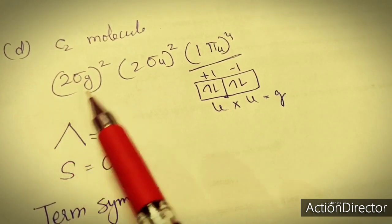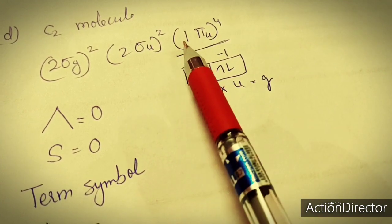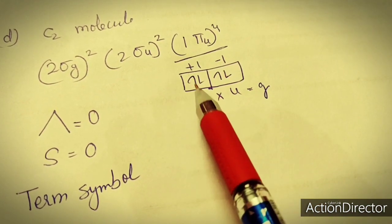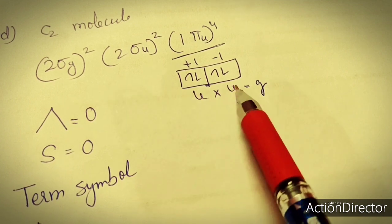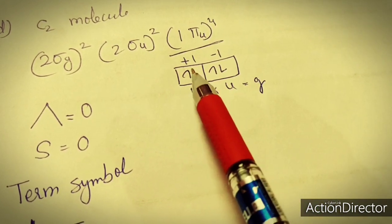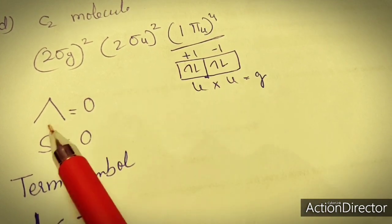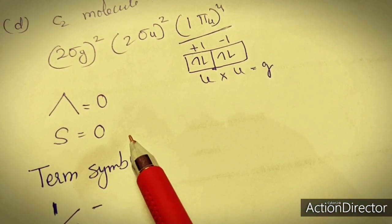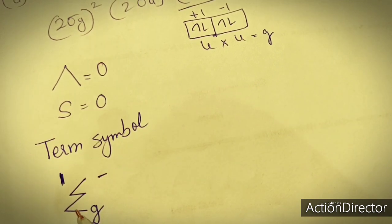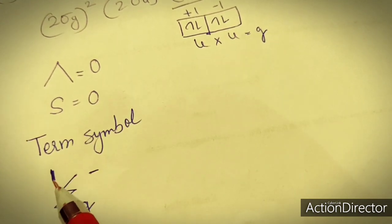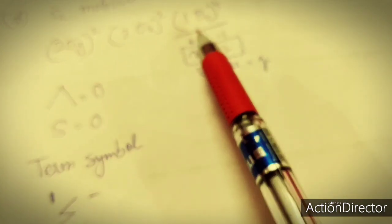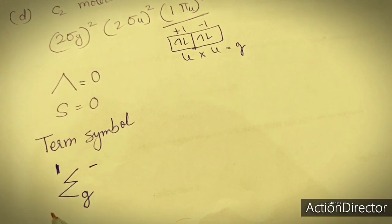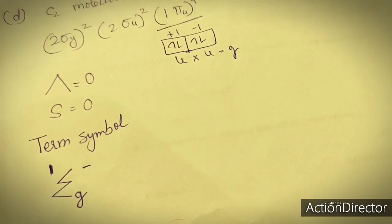For O2 molecule, the last electrons are in 2πg². The two electrons with the same (parallel) spin go into ml = +1 and ml = −1 orbitals, giving lambda = 0 and S = 1. g×g = g, and for pi orbital the sign is minus. The ground state term for O2 is ³Σg⁻.